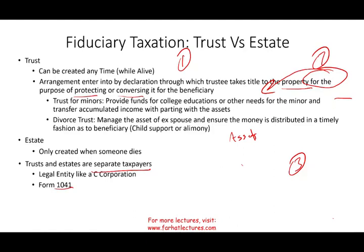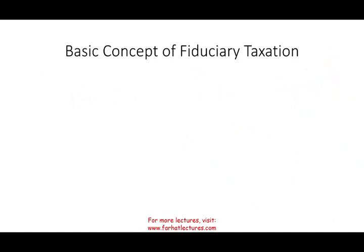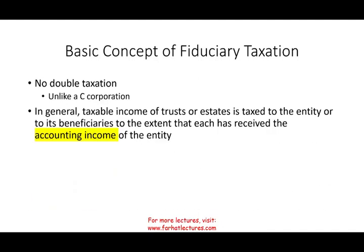Some basic concepts of fiduciary taxation: first, there is no double taxation. Unlike a C corporation — where the corporation pays taxes and then shareholders pay taxes again on distributions — there is no double taxation here. Taxable income of the trust or estate is taxed either to the entity itself or to the beneficiaries to the extent that each receives what's called accounting income. Think of the trust as a conduit that holds money and passes it to the beneficiaries — similar to an S corporation or partnership as a flow-through entity.